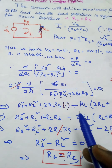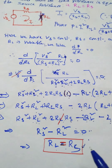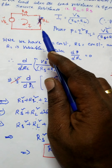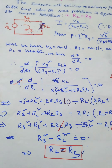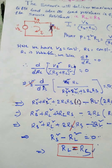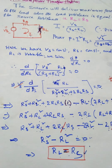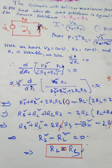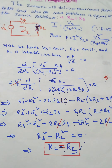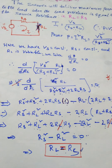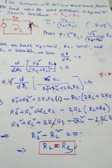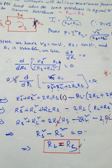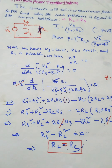When load resistance equals source resistance, maximum power will be delivered to the load. For example, in an audio or radio speaker, if you want maximum output power, your source resistance should be equal to the load resistance, and then you will get maximum power at the speaker. This concludes the maximum power transfer theorem.